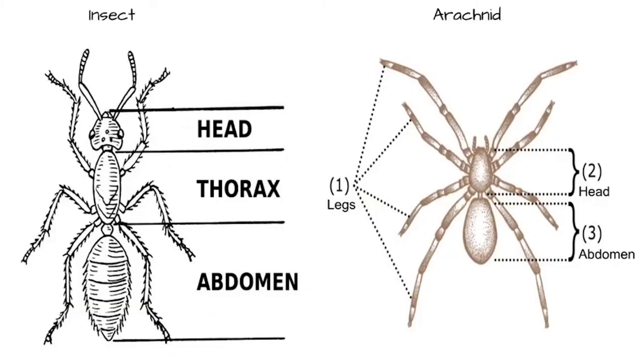If you're confused as to what this is, let's look at this diagram. On the left is the insect — it has three main parts: the head, the thorax, and the abdomen. On the right is the arachnid; it only has a head and an abdomen. An arachnid doesn't have a thorax. The other main difference is that insects have six legs while arachnids have eight.